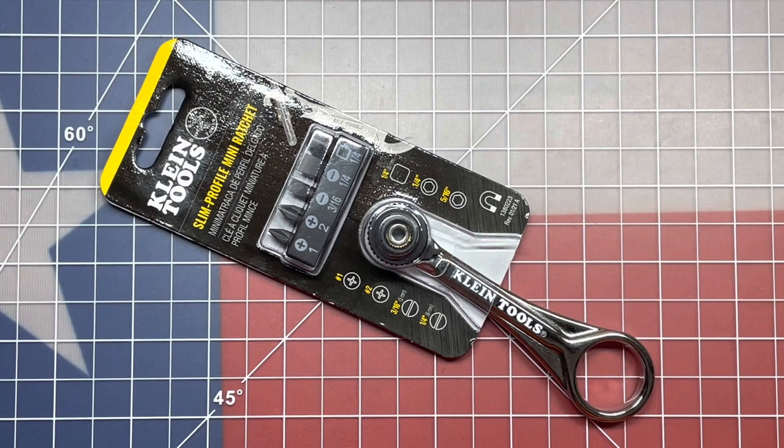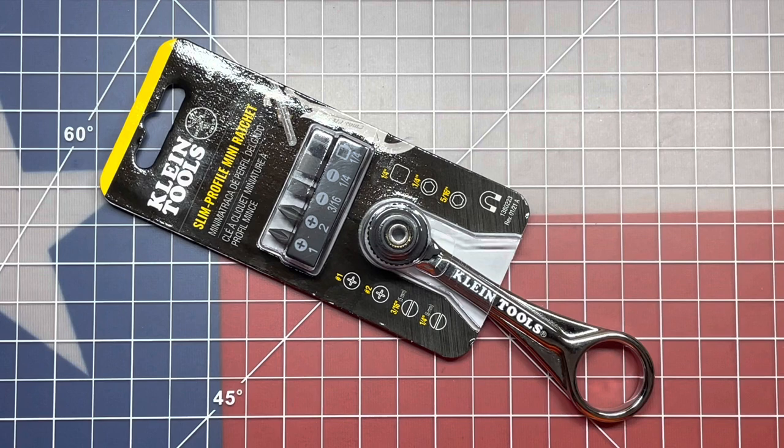This is a Slim Profile Mini Ratchet from Klein Tools, part number 65200. I bought this at Home Depot and paid like $21 for it. You can get it on Amazon a little bit cheaper than that, I think I saw it for $16.95 or $16.97. I'll put links down below for this ratchet.